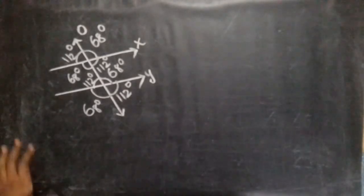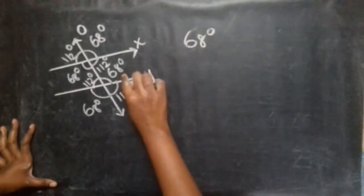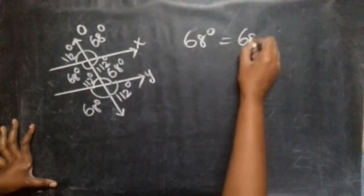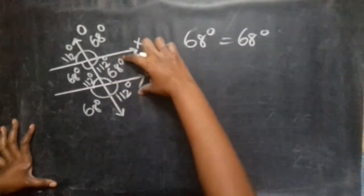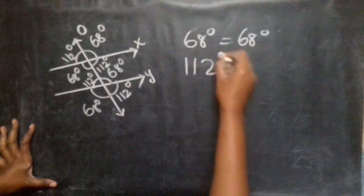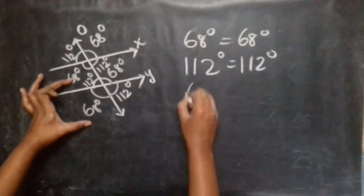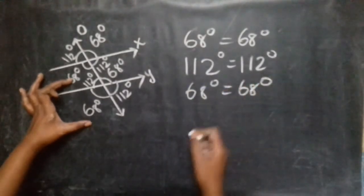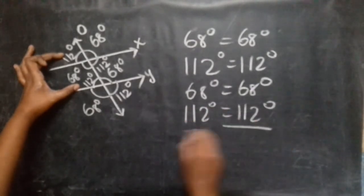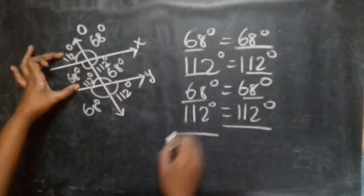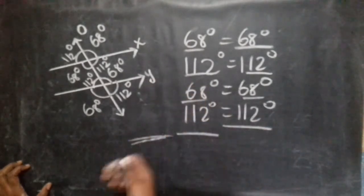If you find out this angle is 68 degrees, the corresponding angle is also equal to 68 degrees — equal in measure. Another angle is equal to 112 degrees, and its corresponding angle is also equal to 112 degrees. So if you find the corresponding angles for parallel lines, all 4 pairs are equal in measure.